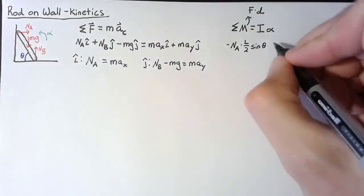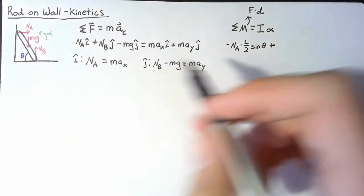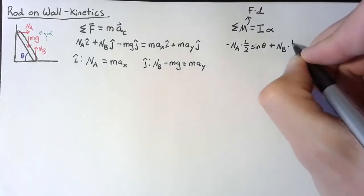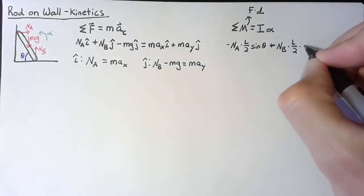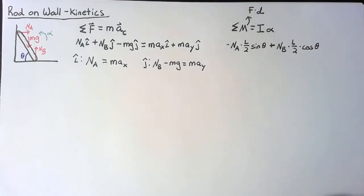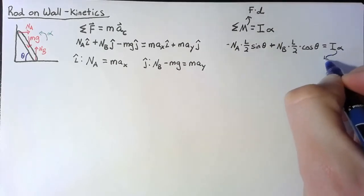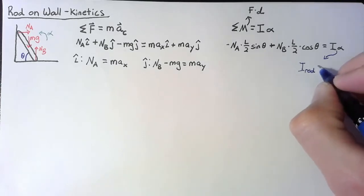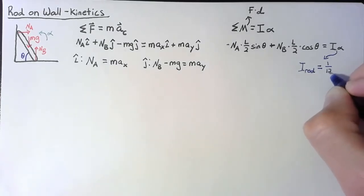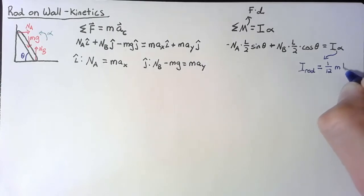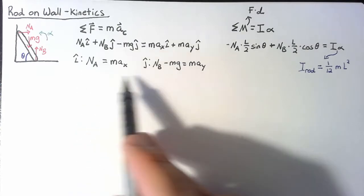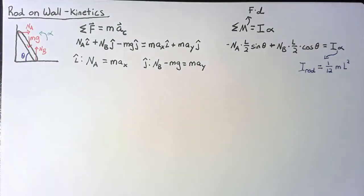For Nb, this moment is positive — it causes positive angular acceleration. The force is Nb and the distance is L over 2 times cosine theta. All of this equals I times alpha, where I is the moment of inertia of a rod rotating about its center point, which is one-twelfth times mass times length squared.